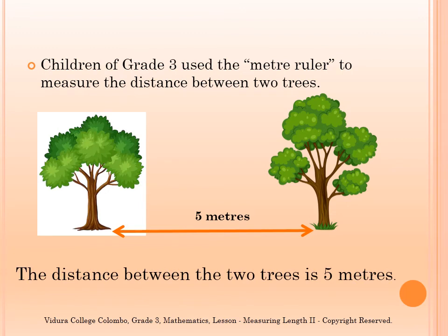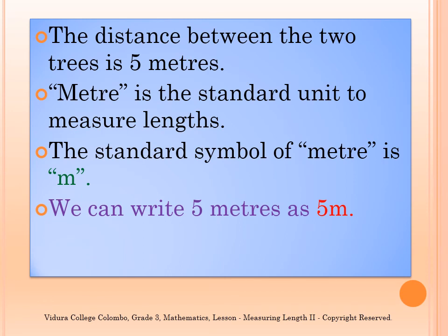Now children, look at the activity done by a group of Grade 3 students using a metre ruler. They measured the distance between two trees using a metre ruler and got the measurement as 5 metres. So, the distance between those two trees is 5 metres. As you know, metre is the standard unit to measure lengths, and the standard symbol of metre is simply M. So you can write 5 metres as 5 M.